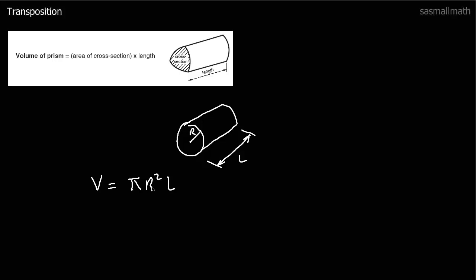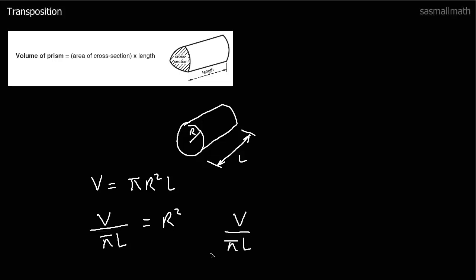If we had to find the radius, we make r the subject. You can see it's been multiplied by pi and multiplied by l. You can move them one at a time — divide by pi first to get rid of the pi, then get rid of the l. Or if you can see it all at once, pi and l both go to the bottom: V over pi l equals r squared. Then we square root both sides, so the square root of V over pi l equals r.